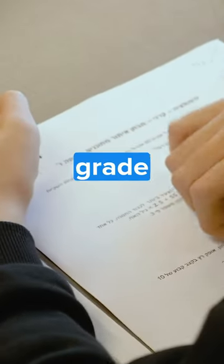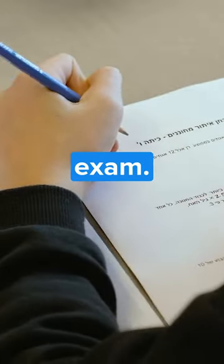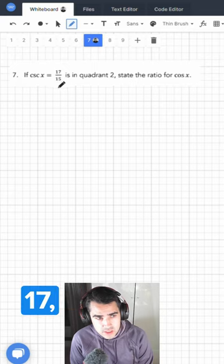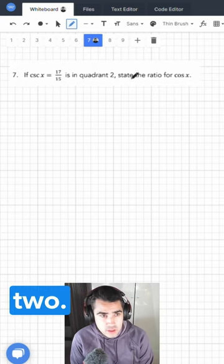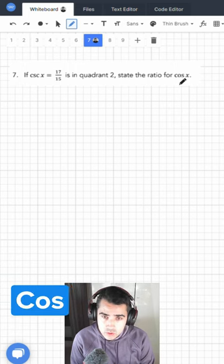This trigonometry question is going to be on your grade 11 math final exam. Secant x equals 17 over 15 is in quadrant 2. State the ratio for cos x.